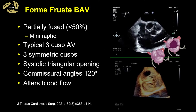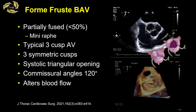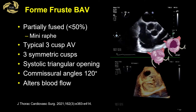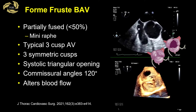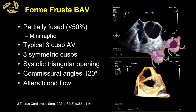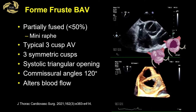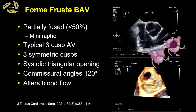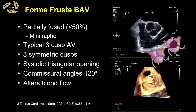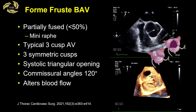The other type is the forme fruste bicuspid valve. This valve has partial fusion of less than 50% of the cusp, creating a mini raphae. The valve appears to have three symmetric cusps which create a triangular opening during systole. The commissural angles are at 120 degrees. While functionally normal in appearance, the partial cusp fusion alters blood flow through the valve.